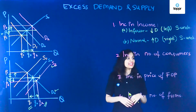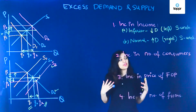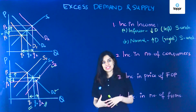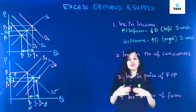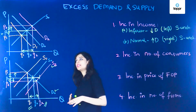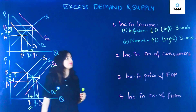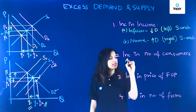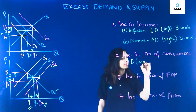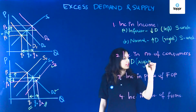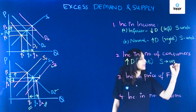Now let's talk about an increase in the number of consumers. If the number of consumers increases, the demand for any product increases, which means the demand curve moves from D0 to D1 — an increase in demand to the right — and the supply remains unchanged.